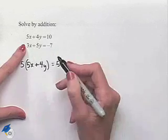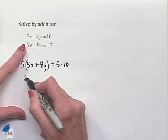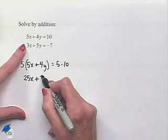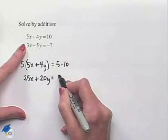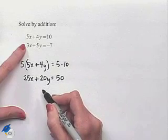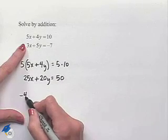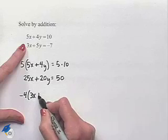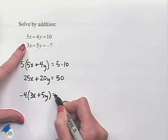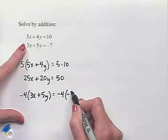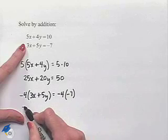We have 25x + 20y = 50. Let's now multiply the second equation by -4. We have -4(3x + 5y) = -4(-7). Evaluating gives us -12x - 20y = 28.